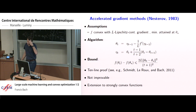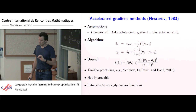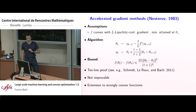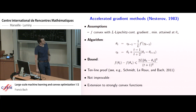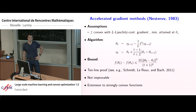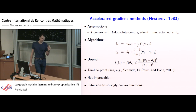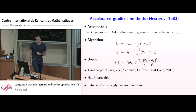This rate of 1/t² is not improvable: no algorithm can do better for minimizing convex functions when the number of iterations t is less than the dimension d. If t is bigger than d, you can do better — for example the ellipsoid method achieves linear convergence, but with a bad constant depending on dimension. For the minimax statistical rates I'll present later, there's no such dimension condition — it's always true whatever n is.